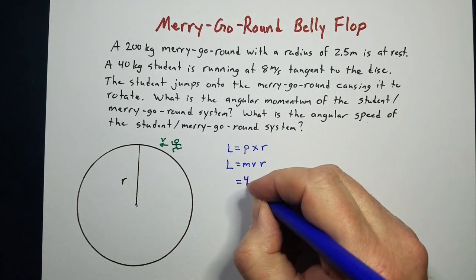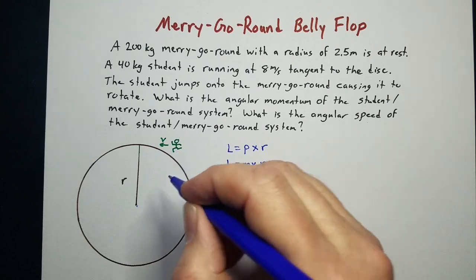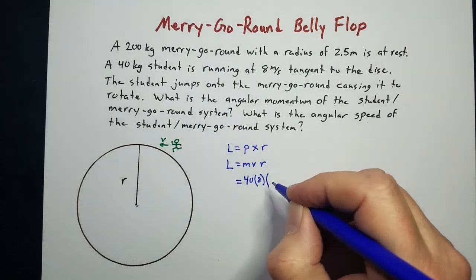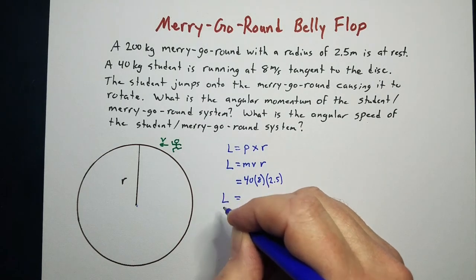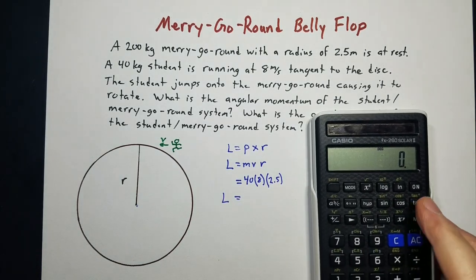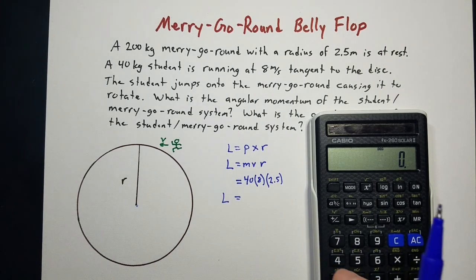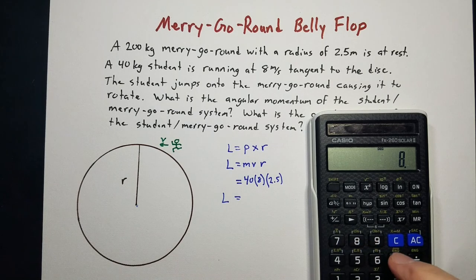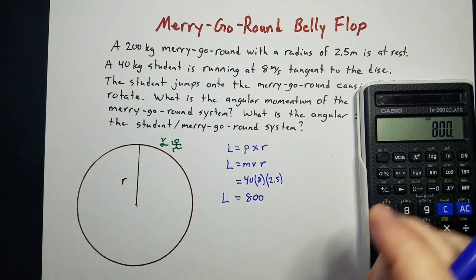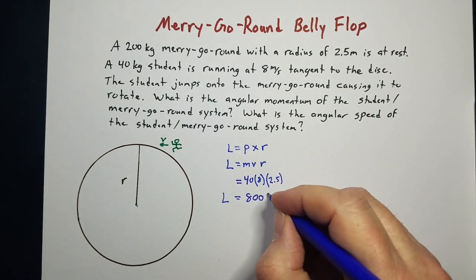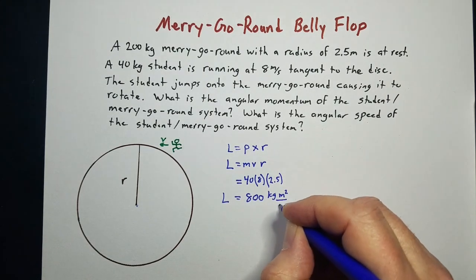We can figure that out. We've got a 40 kilogram student running at 8 meters per second. Since they're at right angles to each other, we can just multiply by the radius, which is 2.5. And we can get the angular momentum of our system right after, because it's going to be equal to the momentum before he jumps on it. 40 times 8 times 2.5 gives me 800 kilograms meters squared over seconds.